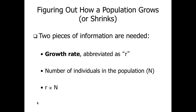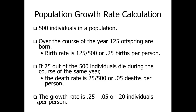To look at how quickly a population grows, we use growth rate, mathematically shown as R. The number of individuals in the population is represented by N. Multiplying R times N gives the new population size after a period of time. For example: starting with 500 individuals, if 125 offspring are born in a year, the birth rate is 125 ÷ 500 = 0.25. If 25 individuals die, the death rate is 25 ÷ 500 = 0.05. Subtracting gives a net growth rate of 0.20, or 20%.